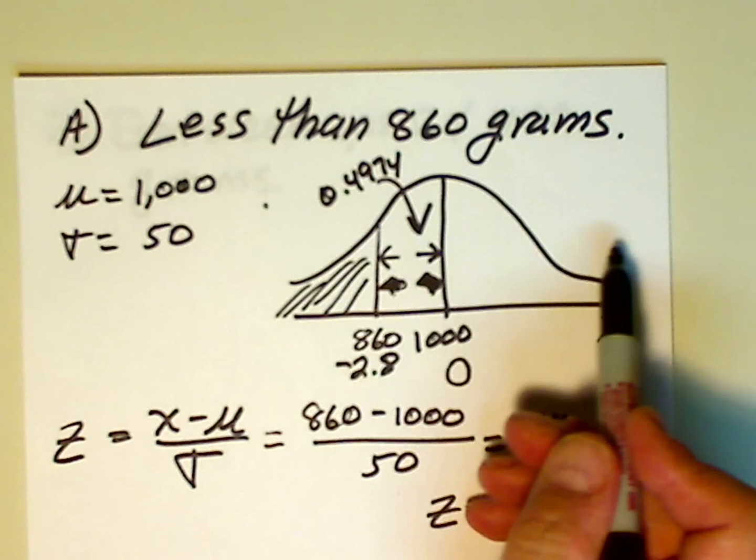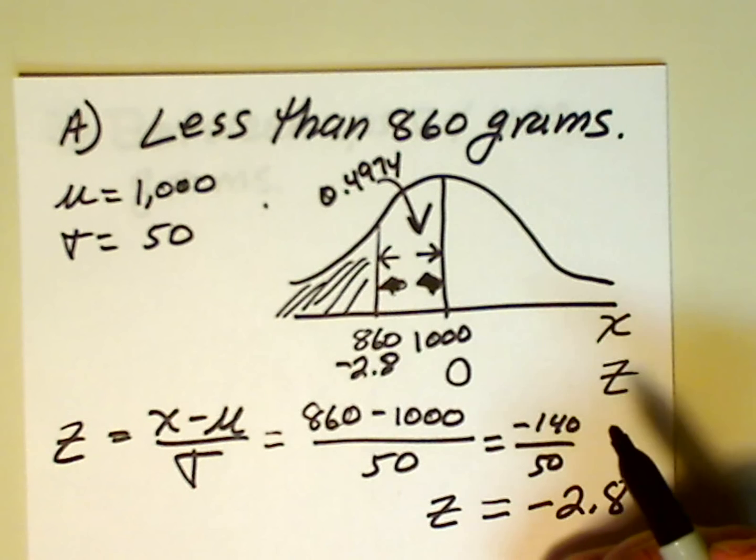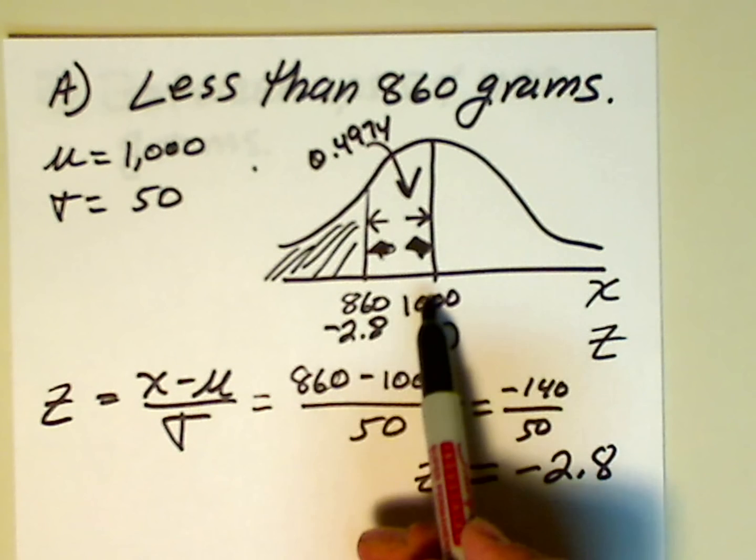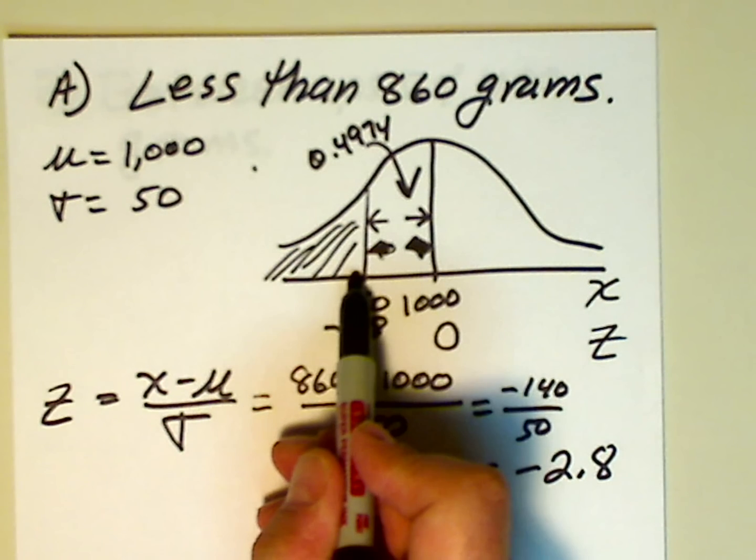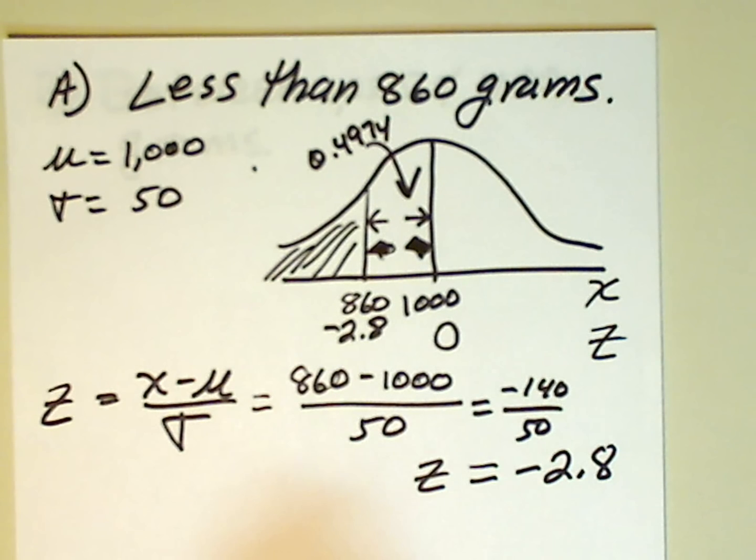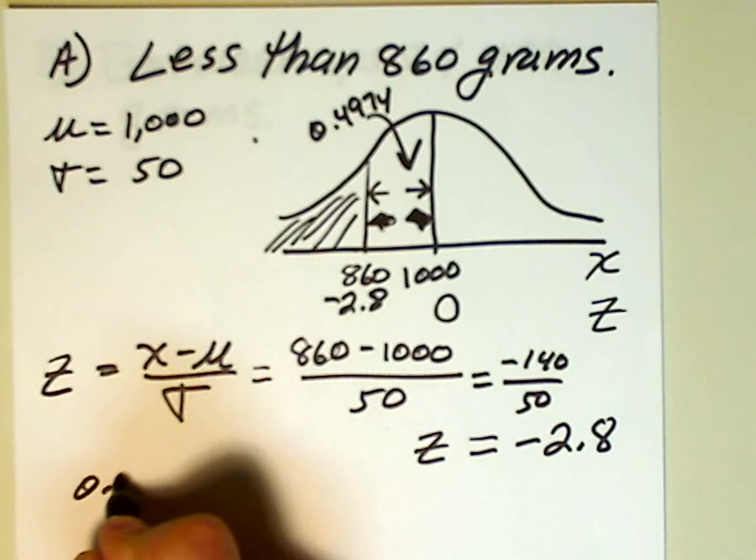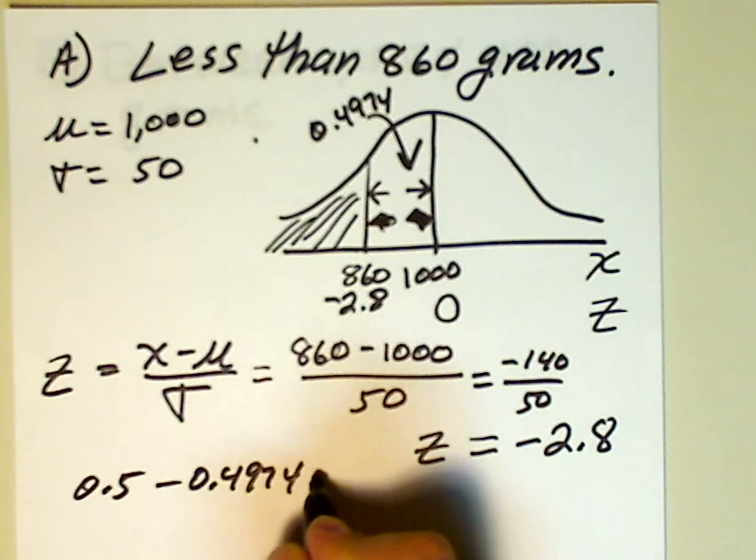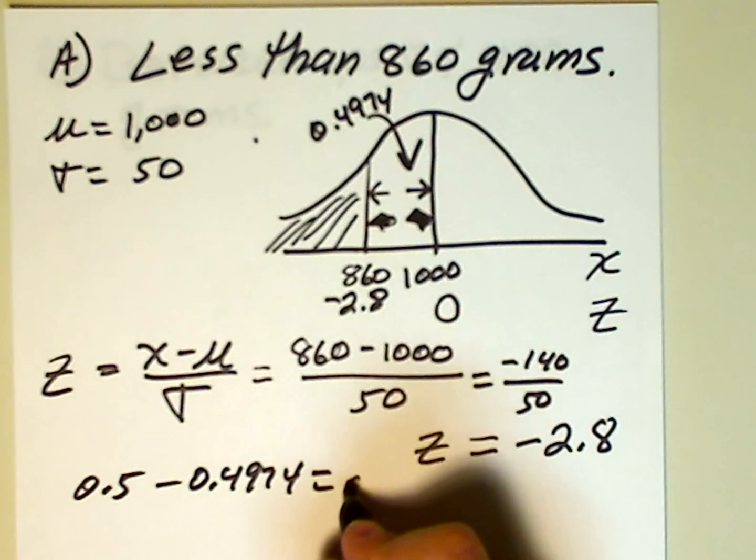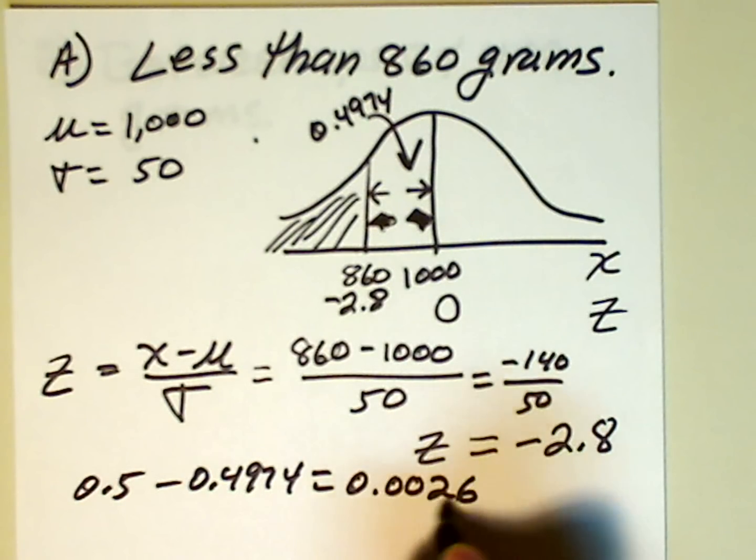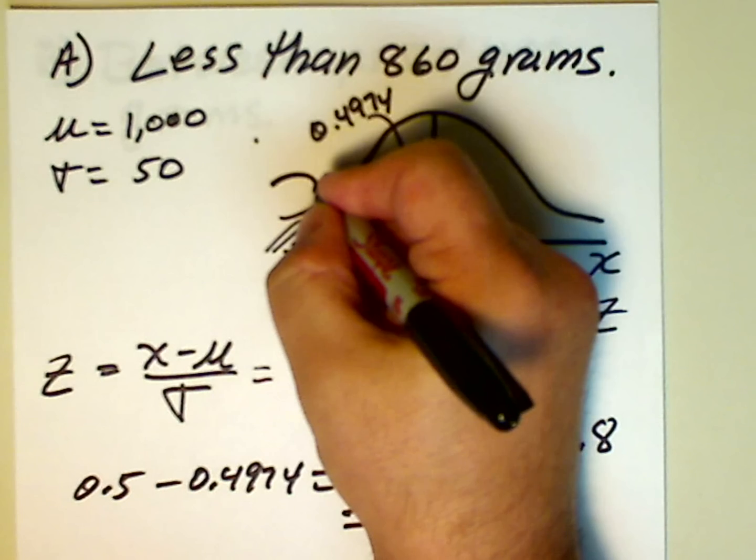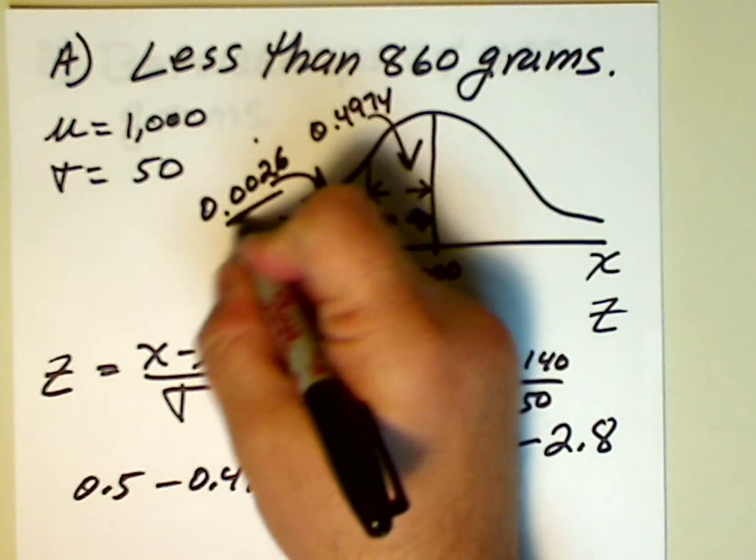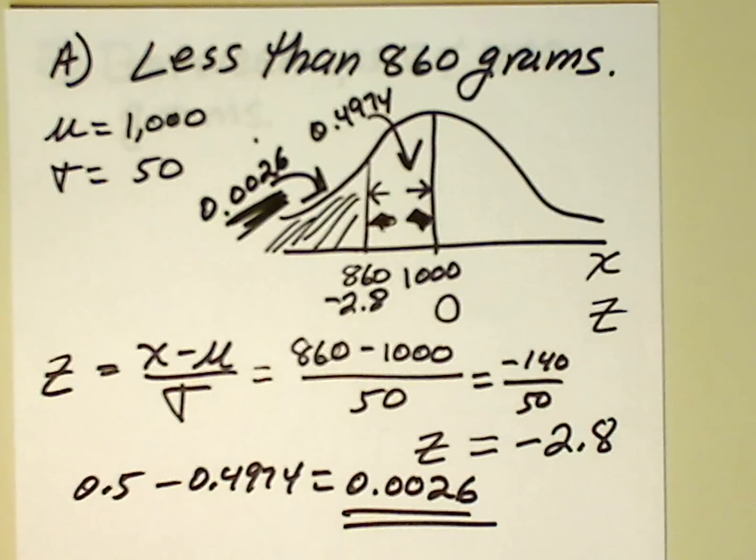So, this area is 0.4974. The area under the total curve is 1. And the area to the left of the mean is 0.5. So, if we take 0.5 and we subtract off this area from 860 to 1,000, that'll leave us with this area below 860. So, let's do that. 0.5 minus 0.4974. That's equal to 0.0026. So, this area is 0.0026. And that's all there is to part A.